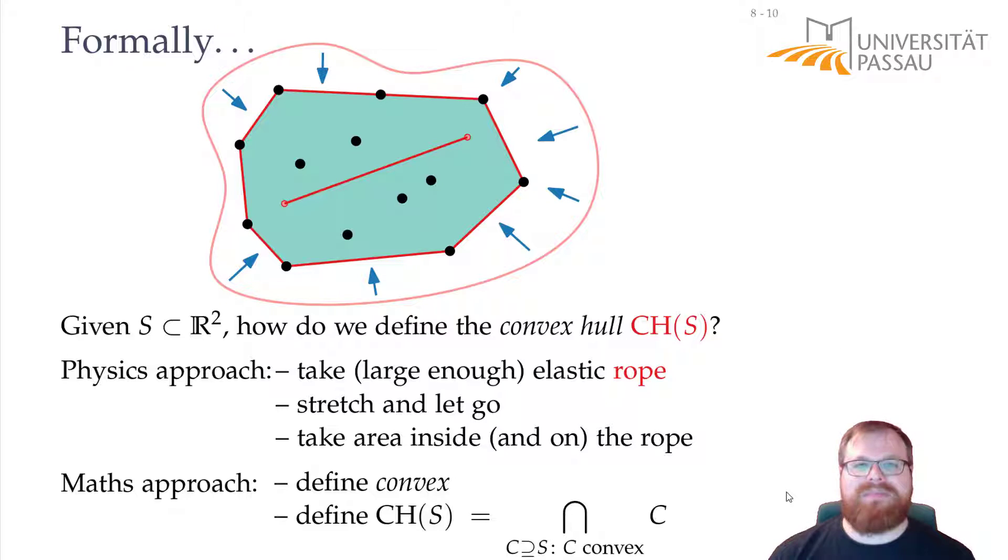Now we have a mathematical definition, and we technically could turn this into an algorithm. Just compute the intersection of these sets. So, you only have to compute all the convex sets that contain S, intersect them, and then you're done. What's the problem with this approach?